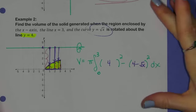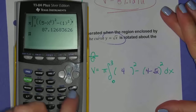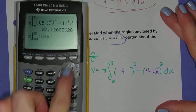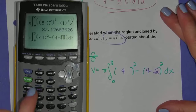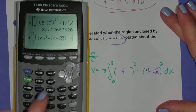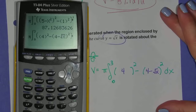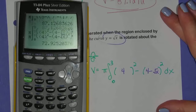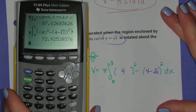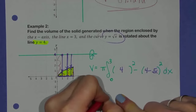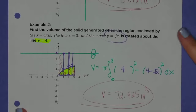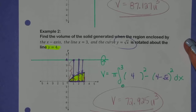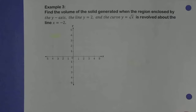When I plug that into the TI-84 — pi, math nine, zero to three, four squared minus (four minus root x) squared dx — I am getting 72.925. So the answer is 72.925 units cubed.